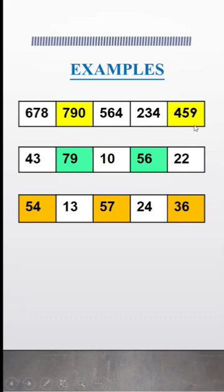234 and 459. 234 is the adjacent cell of 459. 459 is greater than its adjacent cell, therefore 459 is the supercell.